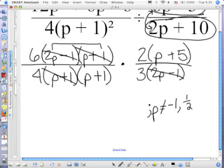What about the numbers? Just put them together real quick. What's 6 times 2? Over 4 times 3. It's 12 over 12. Okay, so all these numbers cancel. So all you have left is P plus 5 over P plus 1.